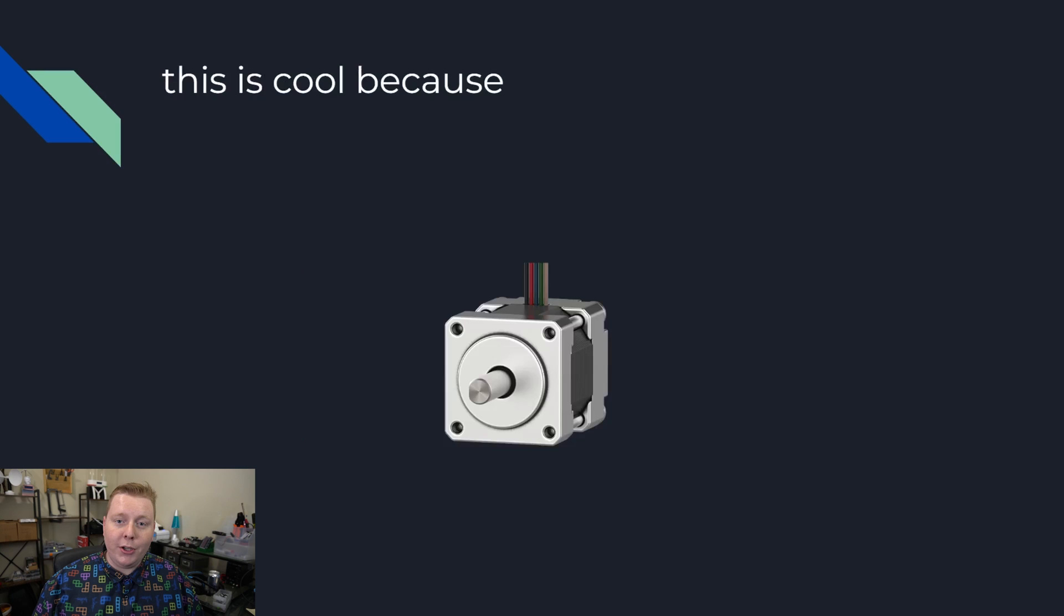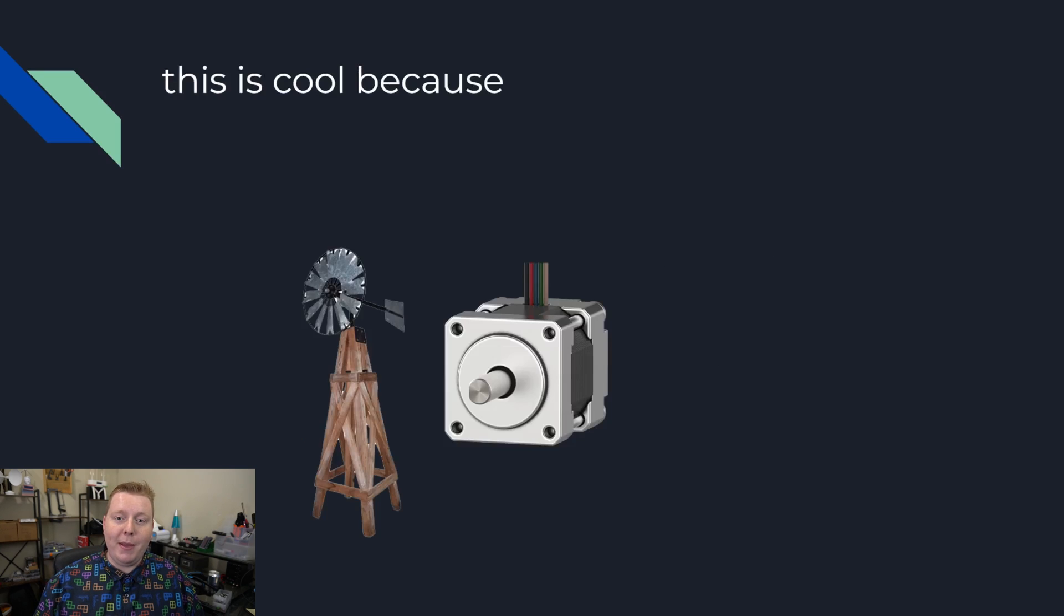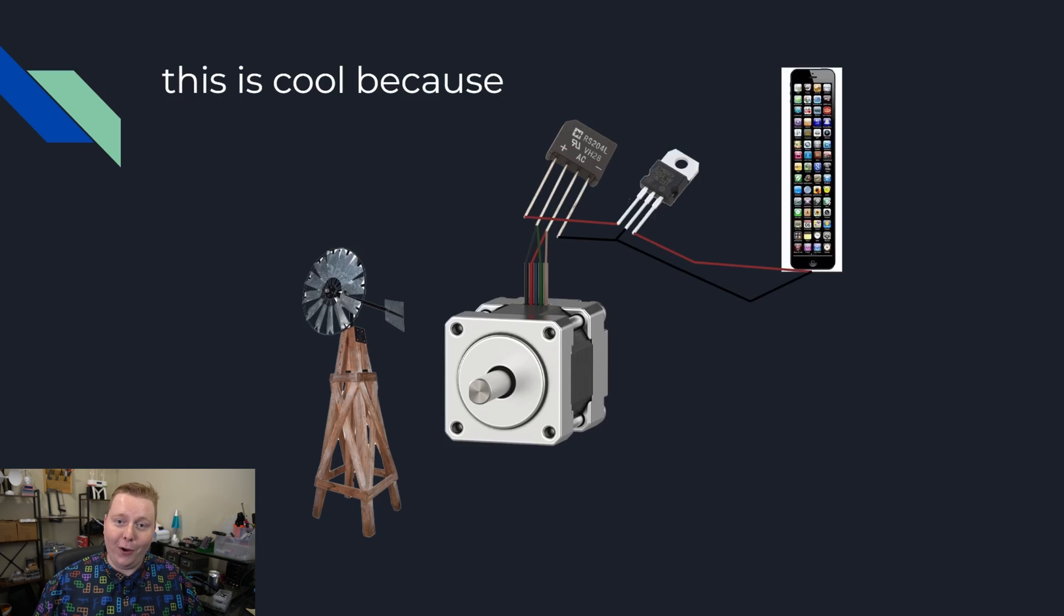This is cool because if you take a motor and you attach a windmill to it, then you can make the wind spin the motor and you can attach the output of the motor to a full bridge rectifier. Then you can take the two outputs of the full bridge rectifier, which are DC, connect that to a voltage regulator and use that to charge your phone.